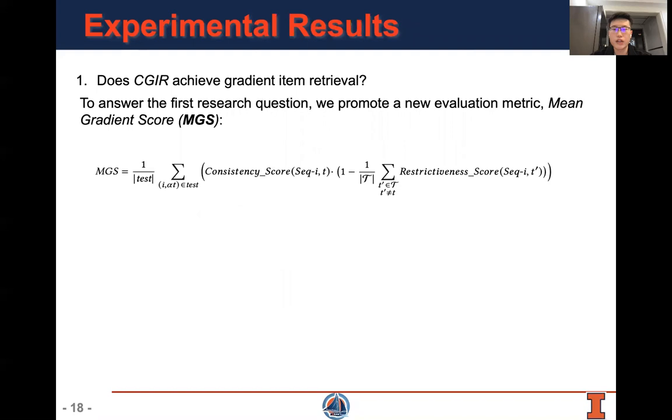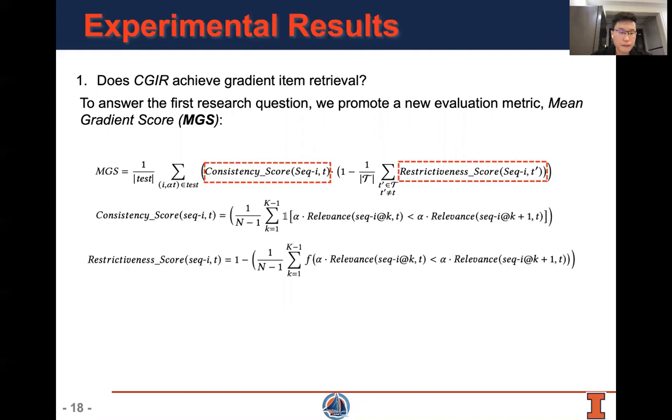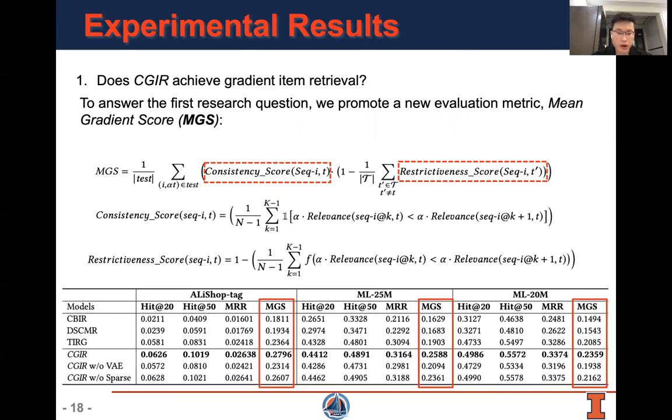To answer the first research question, we propose a new evaluation metric, mean gradient score called MGS. MGS considers consistency score and restrictiveness score. The consistency score will measure when the hidden factor of an attribute changes, to what extent the attribute will change accordingly. And restrictiveness score measures when the hidden factor of an attribute changes, to what extent other attributes will keep the same level. In our experiments, we showed that our proposed model, CGR, can outperform all three baselines under the mean gradient score metric.